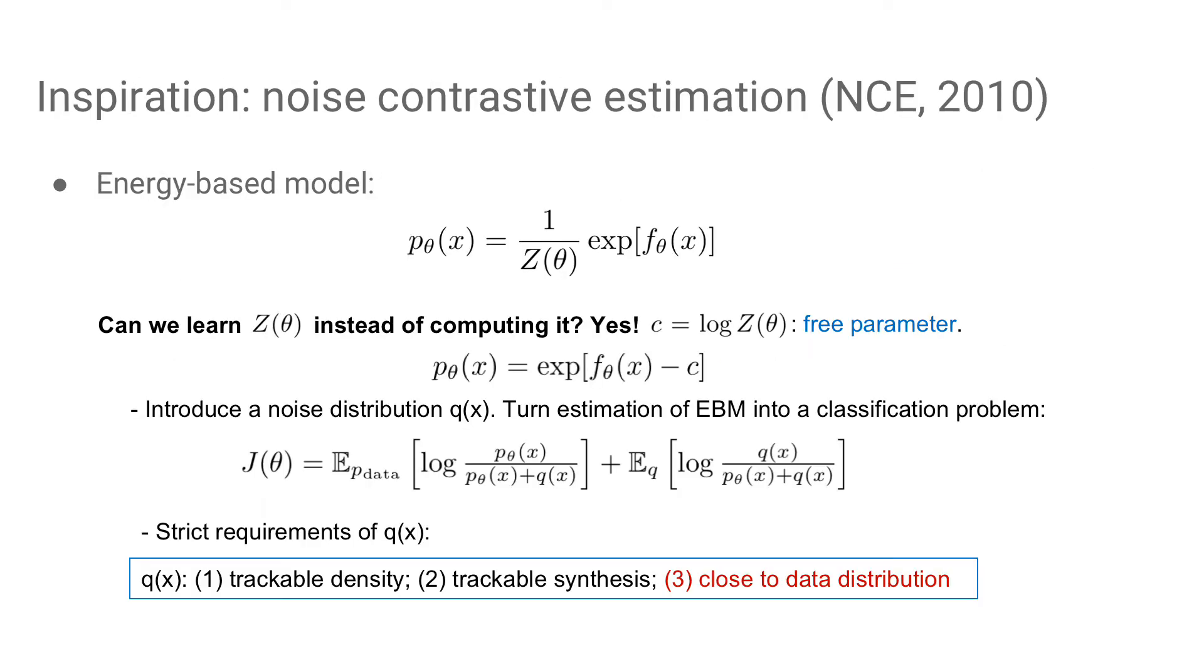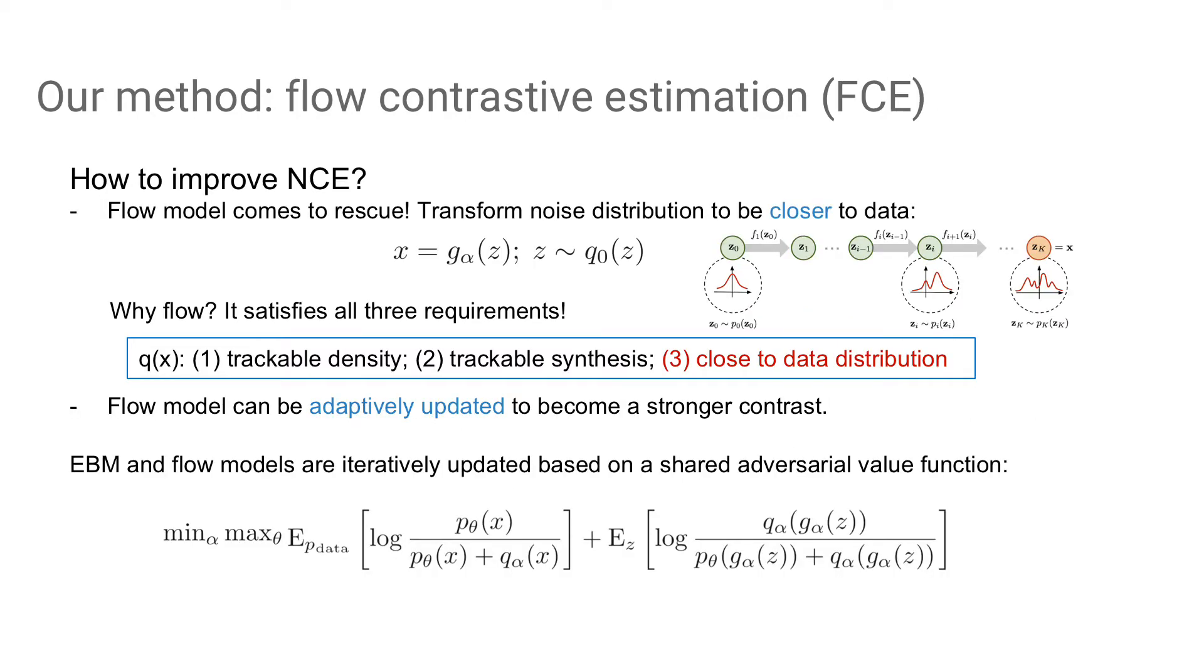Our method is inspired by noise contrastive estimation. In NCE, the log Z is treated as a free parameter. By introducing a noise distribution q, the EBM is learned discriminatively by maximizing the objective j. NCE has strict requirements of q. Q must have tractable density and synthesis ability. More important, NCE only works well when q is close to data distribution, which is usually not true for trivial noise distribution, such as Gaussian. So how to improve NCE?